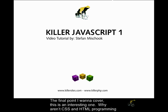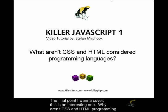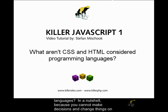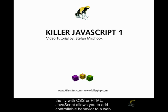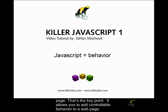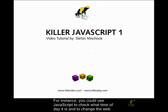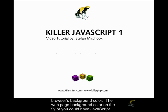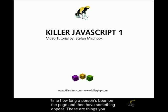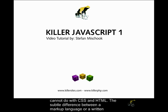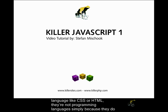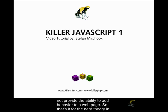The final point: why aren't CSS and HTML programming languages? In a nutshell, because you cannot make decisions and change things on the fly with CSS or HTML. JavaScript allows you to add controllable behavior to a web page. For instance, you could use JavaScript to check what time of day it is and change the web page's background color on the fly, or time how long a person has been on the page and then have something appear. These are things you cannot do with CSS and HTML — that's the subtle difference between a markup language and a true programming language.